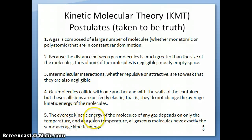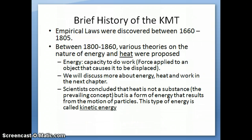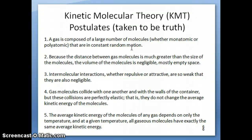Lastly, the fifth postulate relates to heat again: the temperature of the gas is proportional to the average kinetic energy of the molecules. Clausius proposed this because at that point they understood that heat was a form of energy resulting from the motion of particles. He extended this to gases and said that if gases are moving randomly, they're going to have this energy of motion called kinetic energy. What we actually observe is not the energy directly, but the temperature — which corresponds to how much energy the gas molecules have. All gas molecules have exactly the same average kinetic energy at a given temperature.